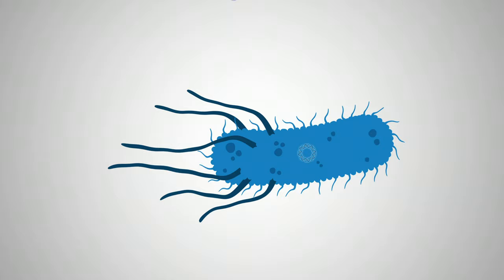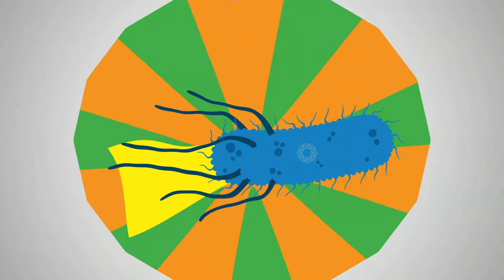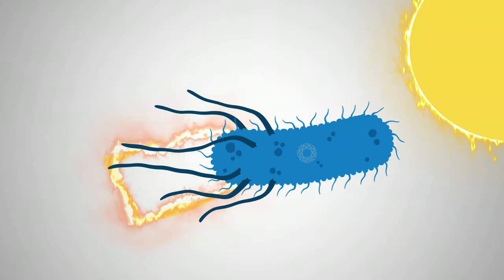In nature, plasmids often contain genes that provide a competitive advantage, giving its host bacterium an ability that it didn't have before. These benefits include antibiotic resistance, the wherewithal to survive in harsh environments, and even the ability to wage war to gain an environmental advantage.